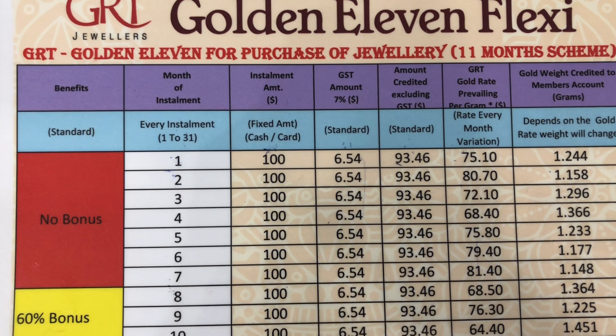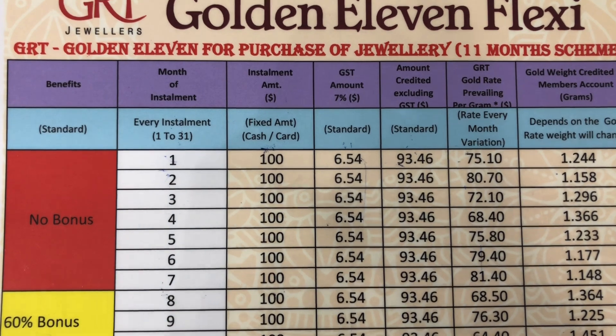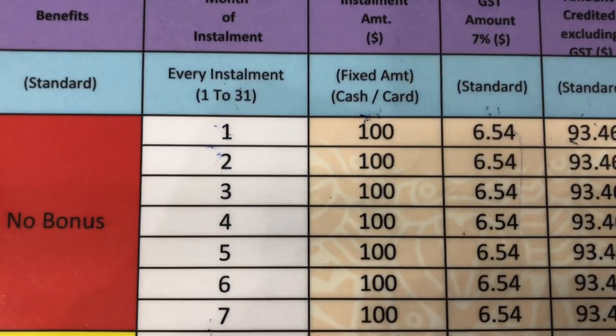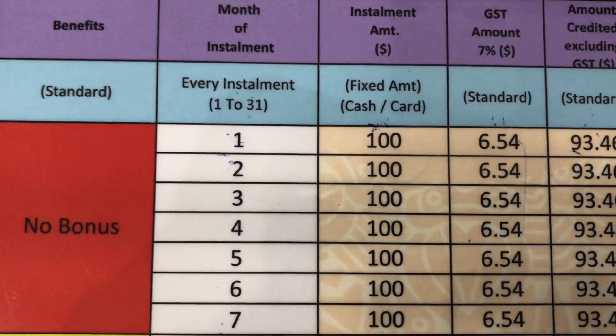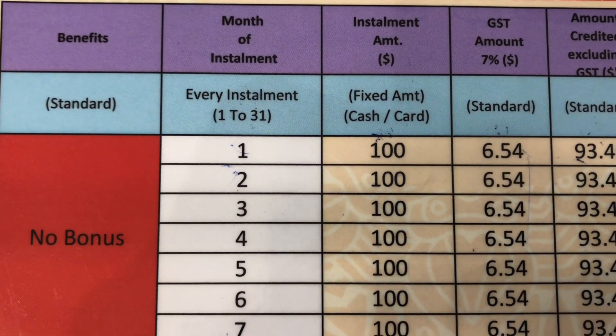We will explain to you about the Golden 11 Flexi Scheme. You contribute a constant amount of money for 11 months, and we will explain this using a tabular format covering the value-based $100 example.